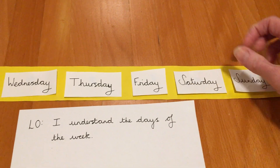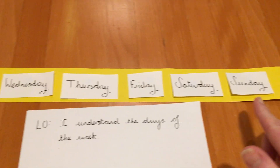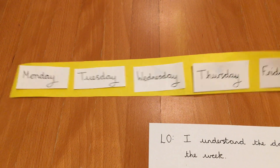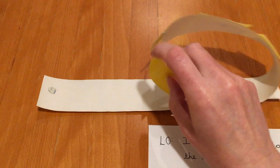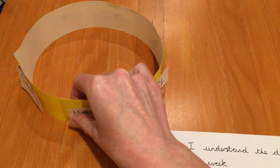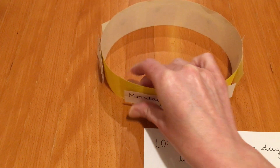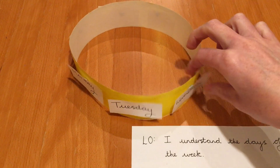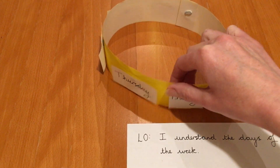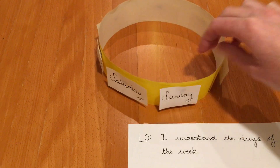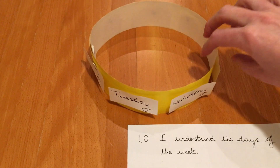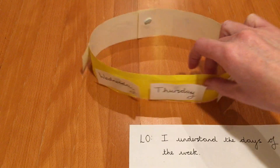So what follows Sunday? We go back to Monday, don't we? So really, if I pick this up and stick it together to make a loop — that's what weeks are like, aren't they? Monday, Tuesday, Wednesday, Thursday, Friday, Saturday, Sunday, back to Monday again. It just keeps on going through the cycle of a week.